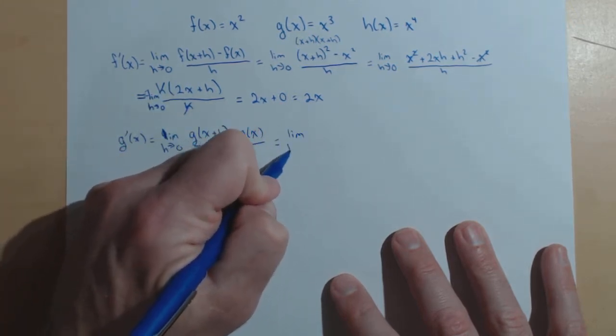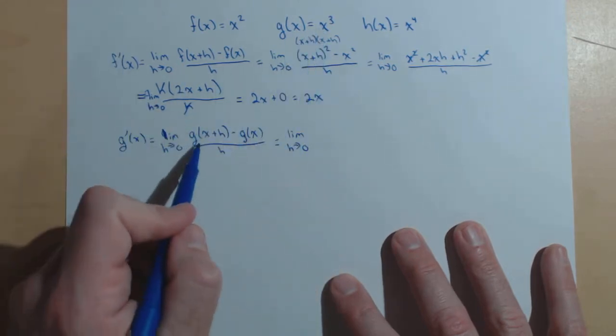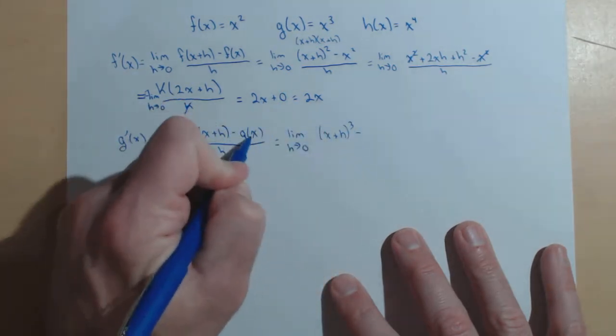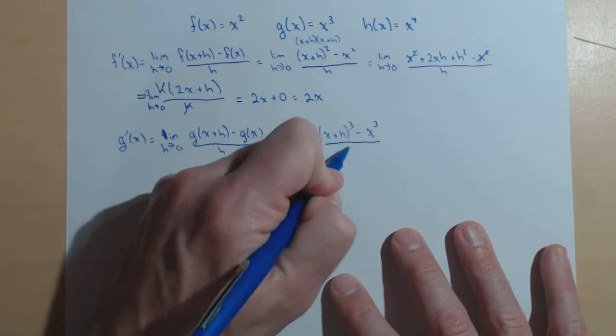So we need to apply our function x cubed. g of x plus h is going to be x plus h cubed minus g of x, which is x cubed, all over h.